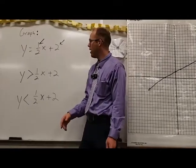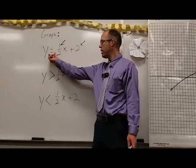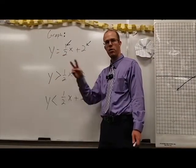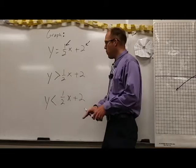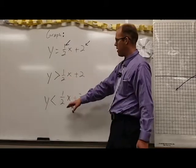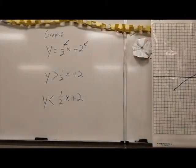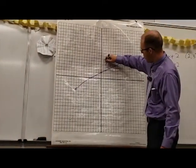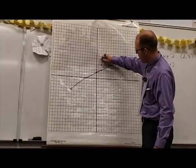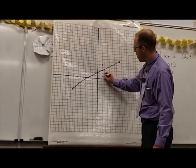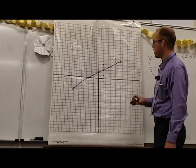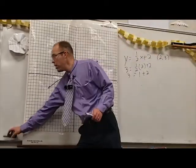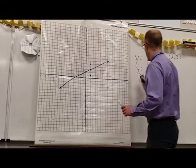What does our picture look like if instead of equals we have greater than? I'm going to pick two points and illustrate that with greater than and less than. The two points I'm going to choose to plug in are two-five and two-one, to see what happens when I put in a point above and a point below the line.